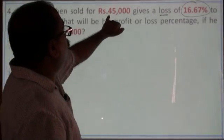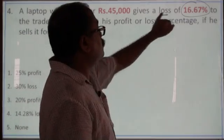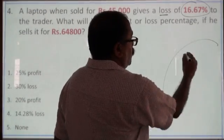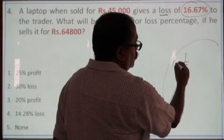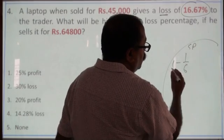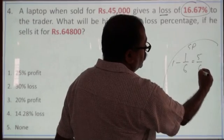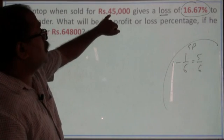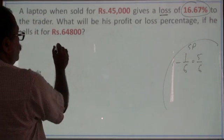Now, by selling this amount for 45,000, he incurred a loss of 1 sixth. And when there is a loss of 1 sixth, then selling price will be 1 minus 1 by 6 that is 5 sixth of the cost price. So, this amount is 5 sixth of the cost price.